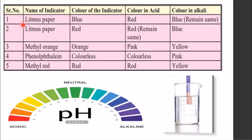Let's check the color changes when we add indicators to acids and bases. Using blue litmus paper: when tested with acid it turns red, and when tested with base it stays blue — so if it turns red, that solution is an acid. Using red litmus paper: when tested with acid it remains red and does not change, but when tested with a base it turns blue.